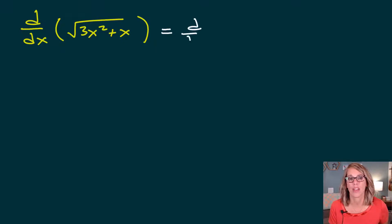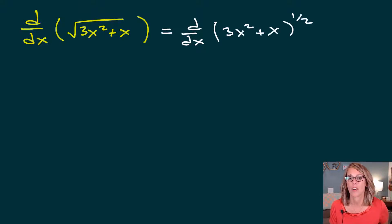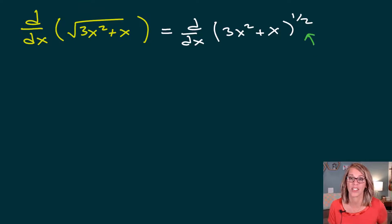I'm going to rewrite this so that I have a one-half power and I can use the power rule. So I've got 3x squared plus x to the one-half power, but what I end up with is a composition or a layering of functions. This one-half is the outer function and 3x squared plus x is the inner function.